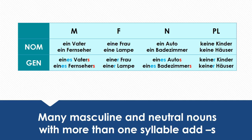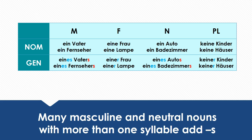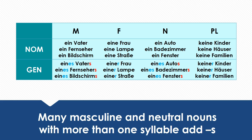Let's take a look at some more examples. Ein Fernseher becomes eines Fernsehers in the genitive case. Eine Lampe becomes einer Lampe. Ein Badezimmer changes to eines Badezimmers. Keine Häuser changes to keiner Häuser. Ein Bildschirm changes to einer Straße. Ein Fenster changes to eines Fensters. Keine Familien changes to keiner Familien.